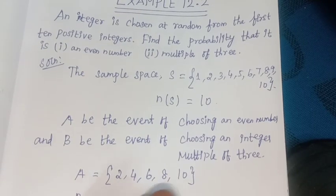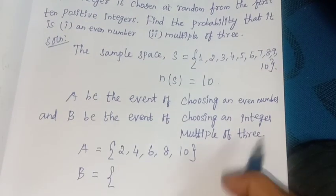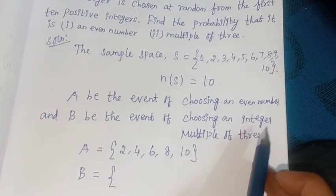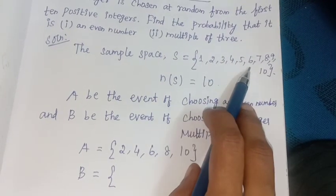And B equals choosing an integer multiple of 3, so {3, 6, 9}.